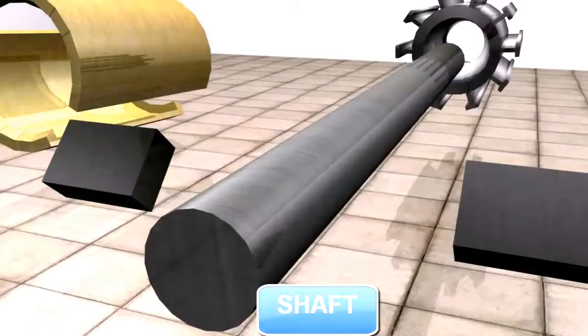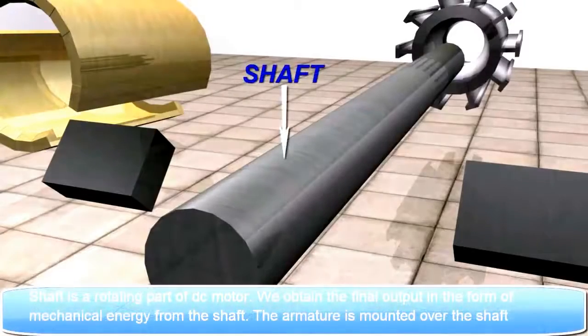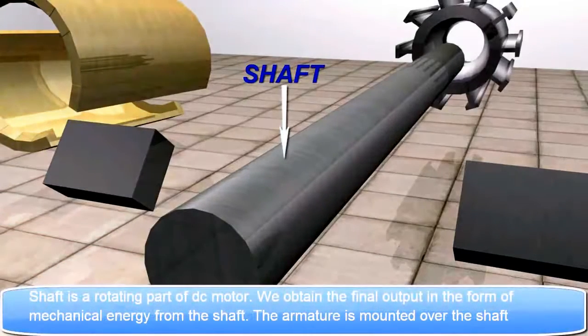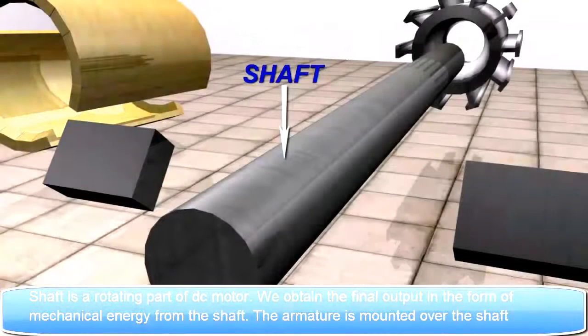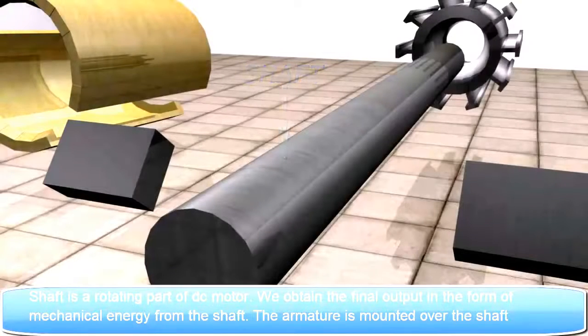Shaft: Shaft is a rotating part of DC motor. We obtain the final output in the form of mechanical energy from the shaft. The armature is mounted over the shaft.